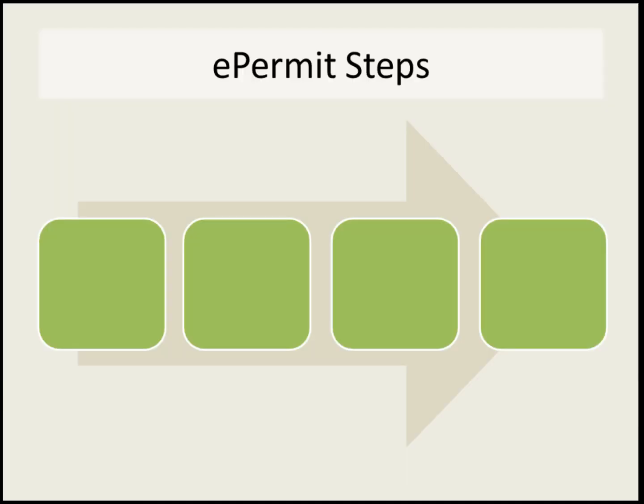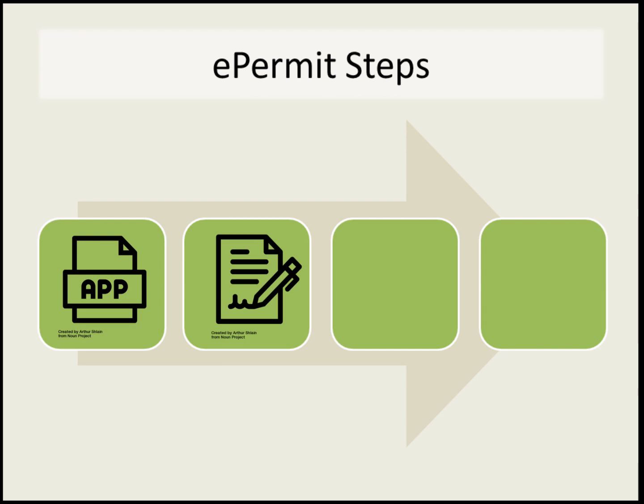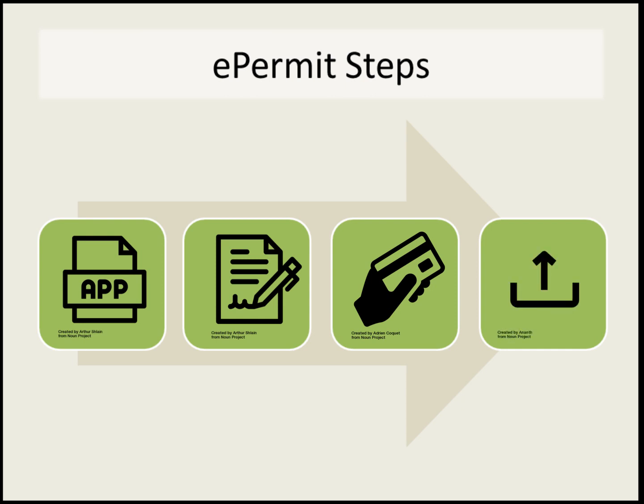There are four main steps in the e-permit process. First, the customer will fill out the application and upload application documents. Then the responsible official will sign the application. Next, the customer will pay the application fee through e-pay. And the final step is to submit the application.